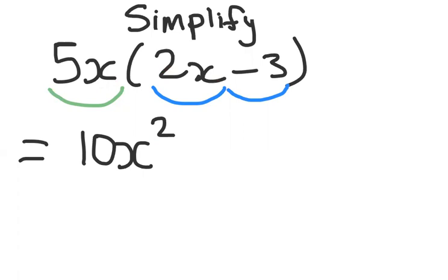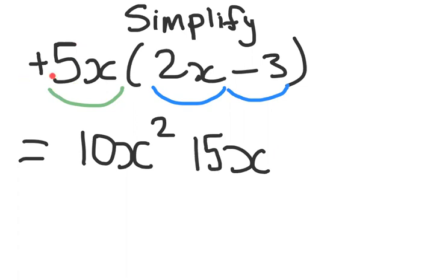Then the second part: 5x multiplied by minus 3. There's only one x, so we write x once. For the numbers, if there's no sign in front of a number, it's an invisible plus. So it's plus 5 times minus 3 — first take 5 times 3 which gives 15, then a plus and a minus gives a minus. So the answer is minus 15x, and that's the first example.